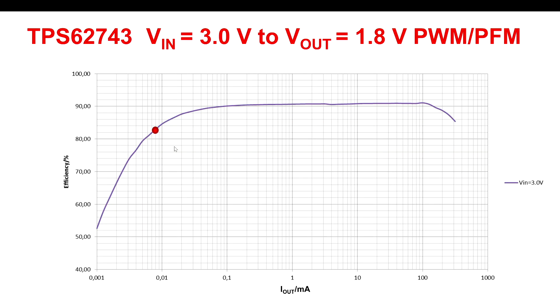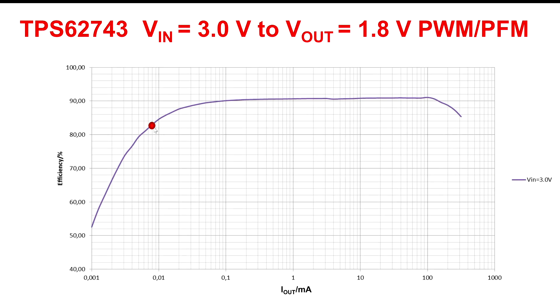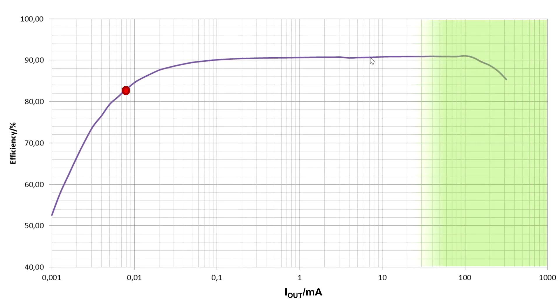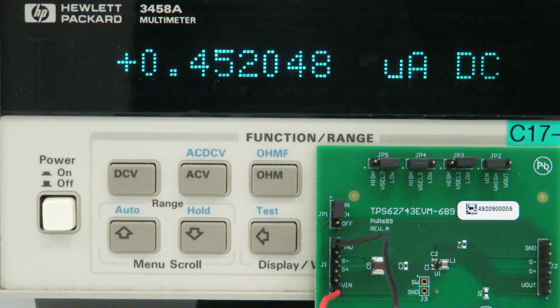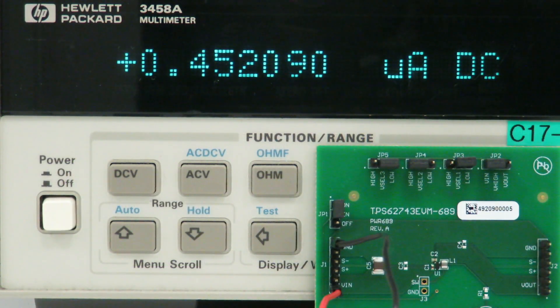Now for that, we look at the efficiency curve of the 62743. And here we can see now that this device operates at 90% efficiency, down to 1 milliamp. And even at two decades lower, we still achieve an efficiency level of 83%. And this we do with a device quiescent current of 360 nanoamps. And this enables a no-load quiescent current we measure on the bench of typically 450-460 nanoamps.